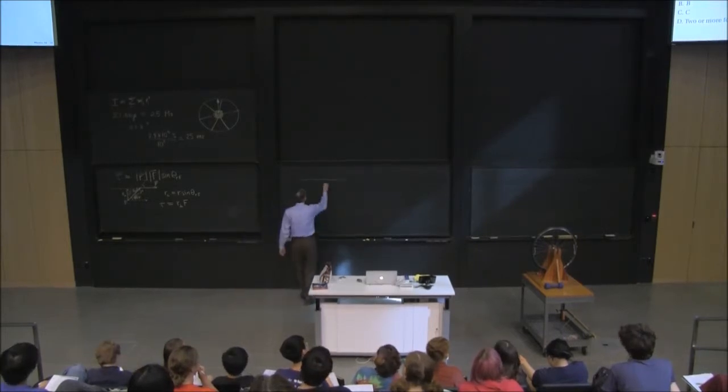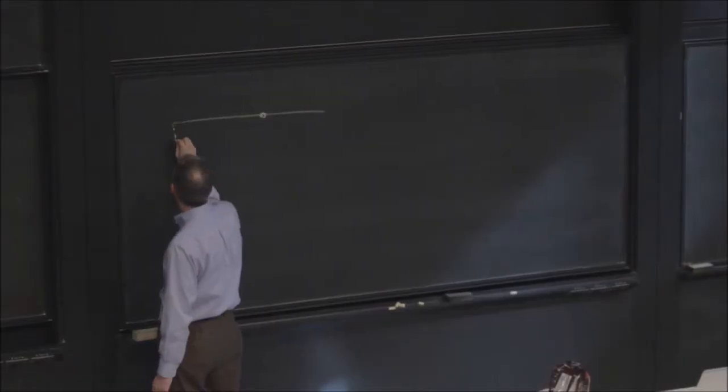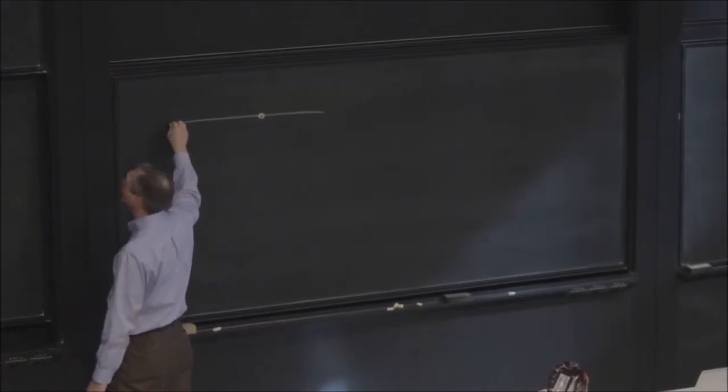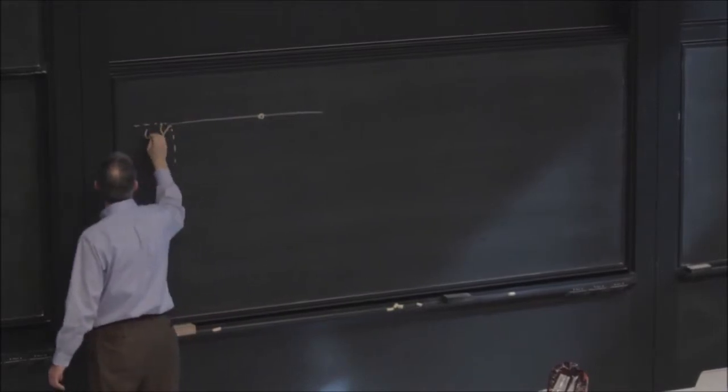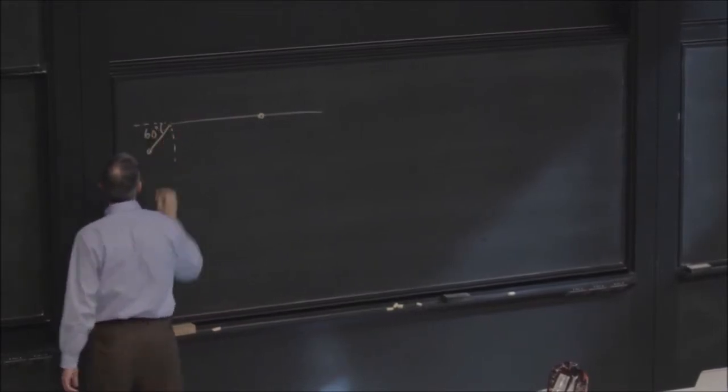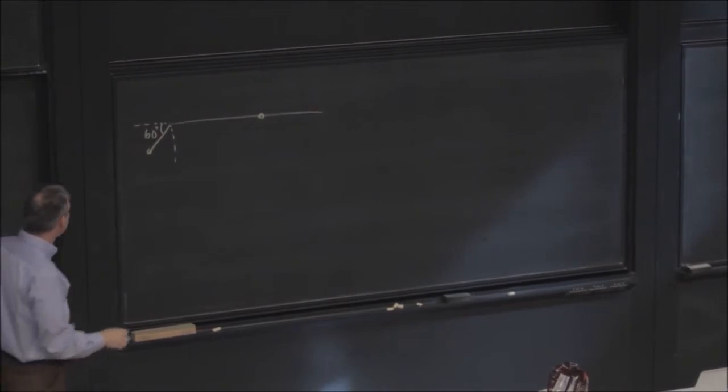And then if you look at A, theta is 60 degrees. And using the formula, torque is r times f times sine theta. It comes up to the square root of three over two, which is greater than 1.5.